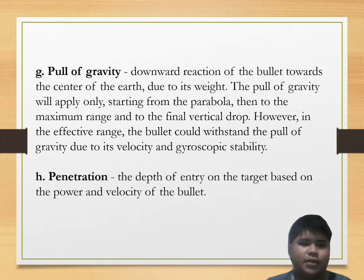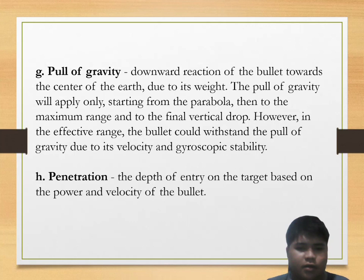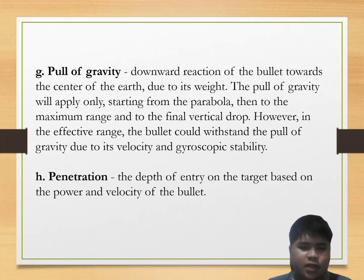Pull of gravity is the downward reaction of the bullet toward the center of the earth due to its weight. The pull of gravity applies starting from the parabola through the maximum range to the final vertical drop. However, in the effective range, the bullet will withstand the pull of gravity due to its velocity and gyroscopic stability. Lastly, penetration is the depth of entry on the target based on the power and velocity of the bullet.